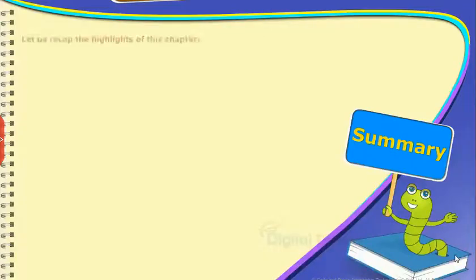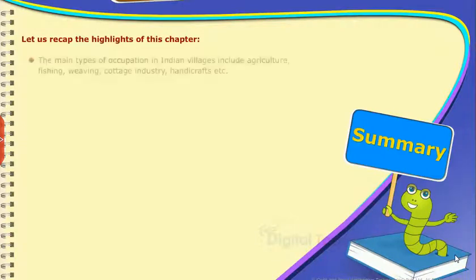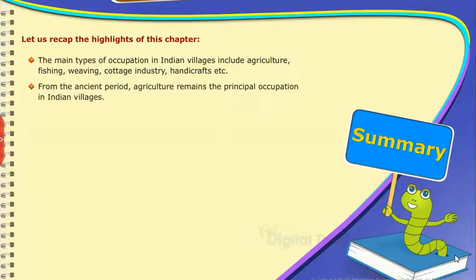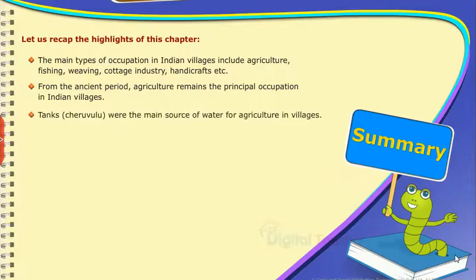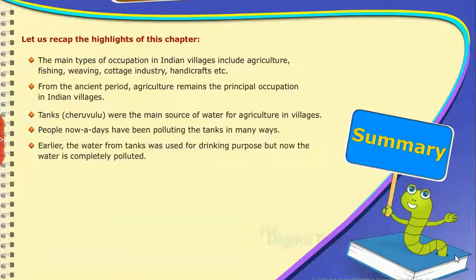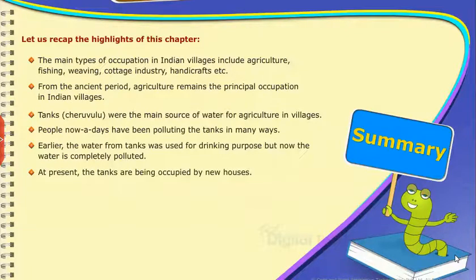Summary: let us recap the highlights of this chapter. The main types of occupation in Indian villages include agriculture, fishing, weaving, cottage industry, handicrafts, etc. From the ancient period, agriculture remains the principal occupation in Indian villages. Tanks or Cheruvulu were the main source of water for agriculture in villages. People nowadays have been polluting the tanks in many ways. Earlier, the water from tanks was used for drinking purpose, but now the water is completely polluted. At present, the tanks are being occupied by new houses.